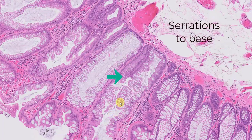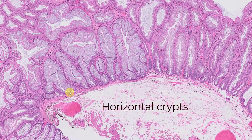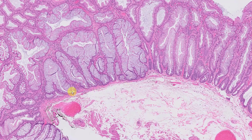Criteria number two is serrations going all the way to the base. Criteria number three is crypts that, instead of going straight down, start deviating and running parallel to the muscularis mucosae. When it happens in the most overt form, what you will see is boot-shaped crypts. That abnormal growth pattern running parallel to the muscularis mucosae is a feature of a sessile serrated lesion.